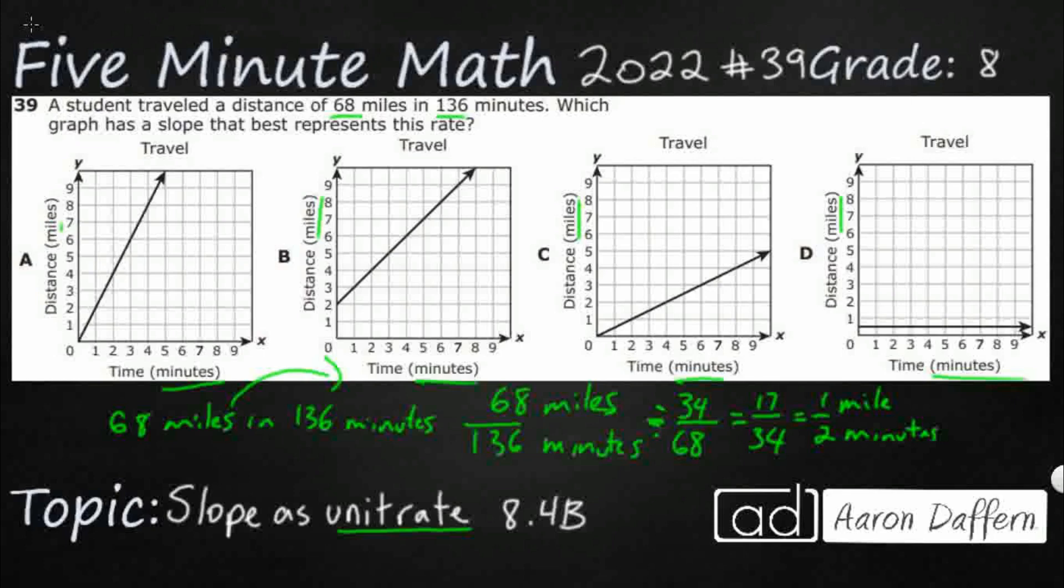If we really wanted to look at it as a decimal form, one half equals 0.5. But I'm going to keep it as this fraction because we can now plot this. We've got our minutes on our x-axis and our miles on our y-axis.